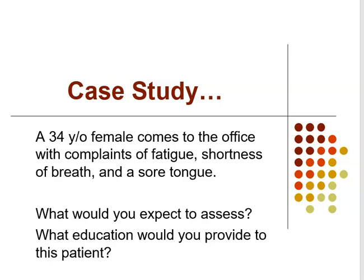Case study: a 34-year-old female presents with fatigue, shortness of breath, and a sore tongue. These clues suggest anemia, and the sore tongue points toward pernicious anemia — so a Schilling test would be appropriate. Educate the patient that manifestations are reversible with treatment but may be permanent if delayed more than six months. Increase dietary intake of vitamin B12 through meats, eggs, and dairy, along with oral supplementation, and consider parenteral vitamin B12 depending on the cause.